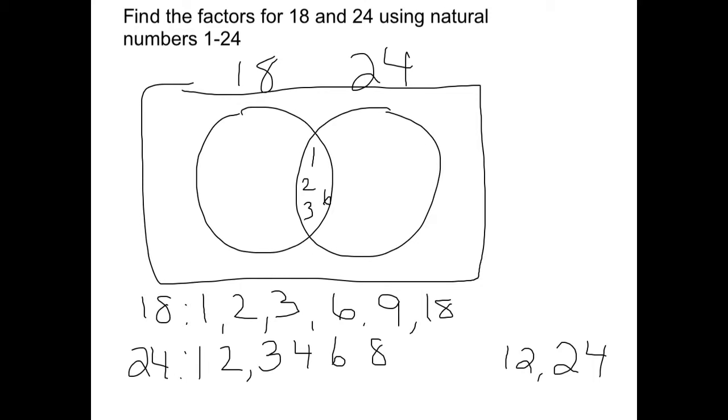Any factors that 18 has that 24 does not need to go on the side for 18. So that would be 9 and 18. Any factors that 24 has that 18 does not go on the side of 24. That would be 4, 8, 12, and 24.